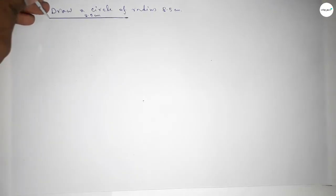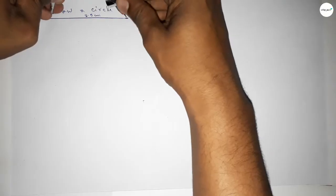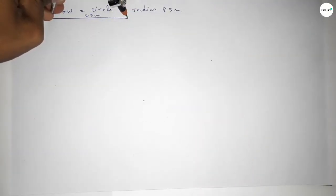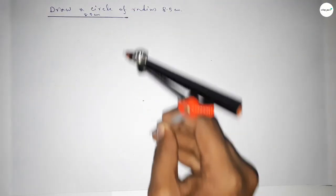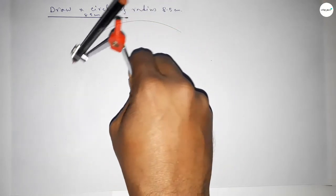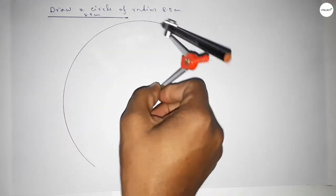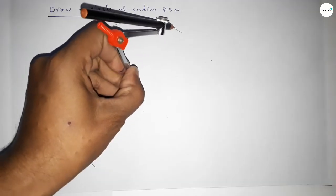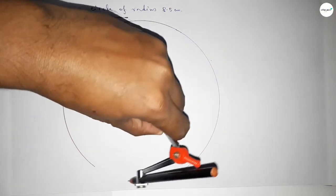By using compass, by this way, now putting the compass on the point here and we have to draw here an arc by this way. Again with same length and putting the compass here and drawing arc by this way.